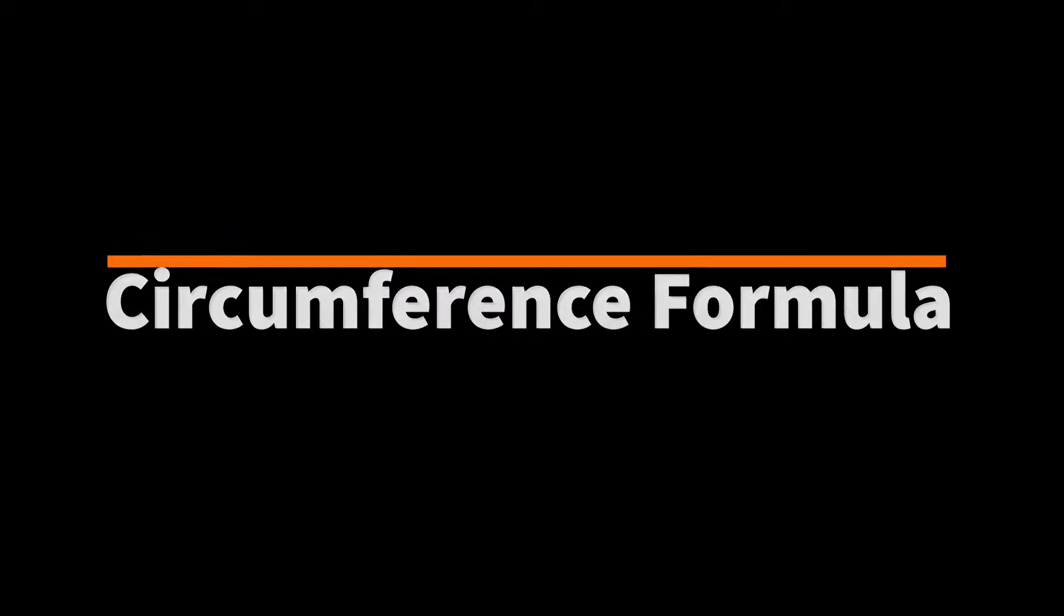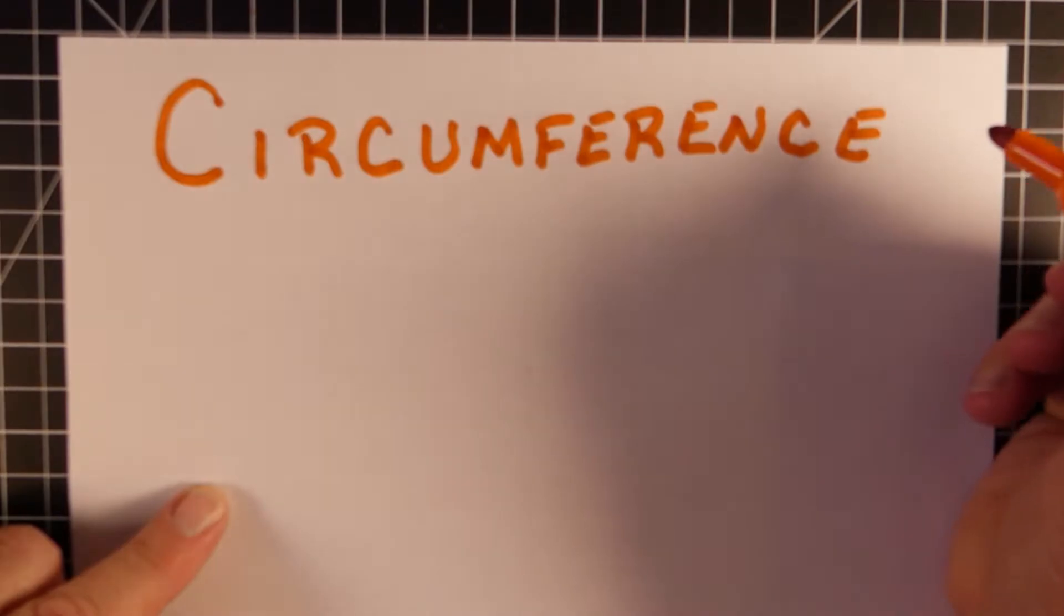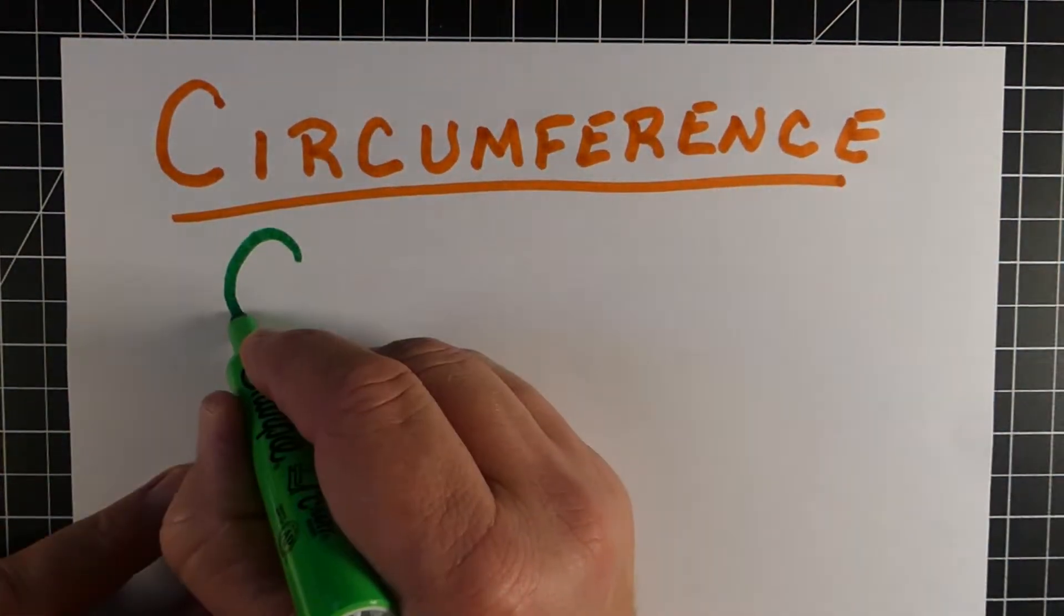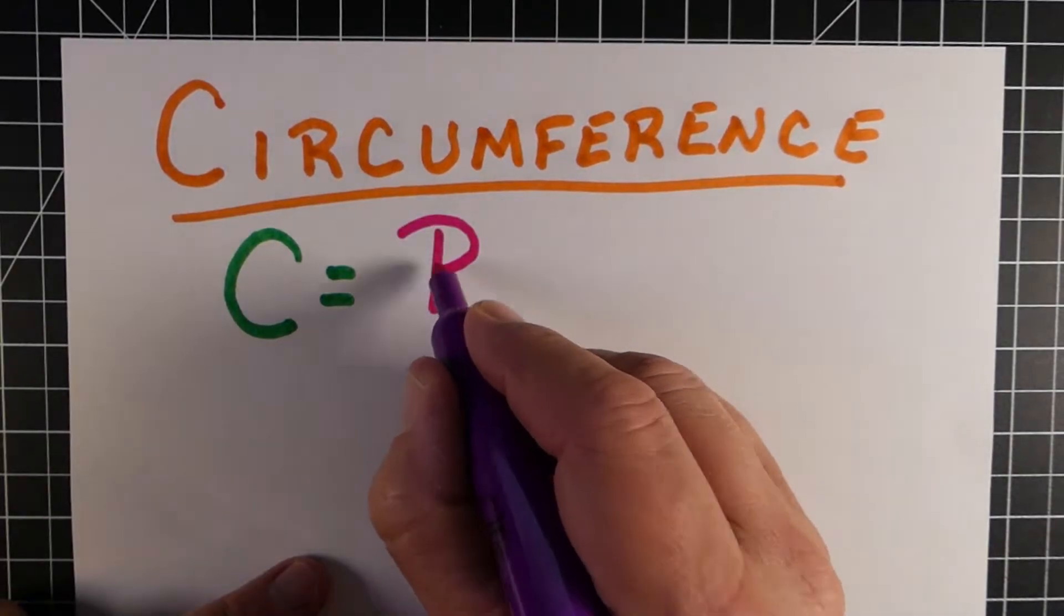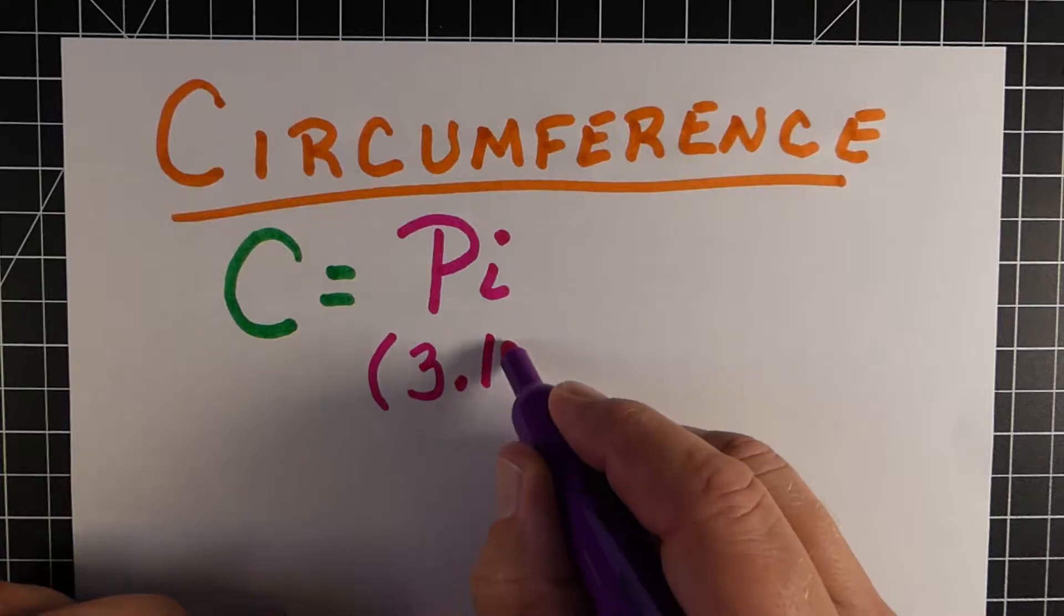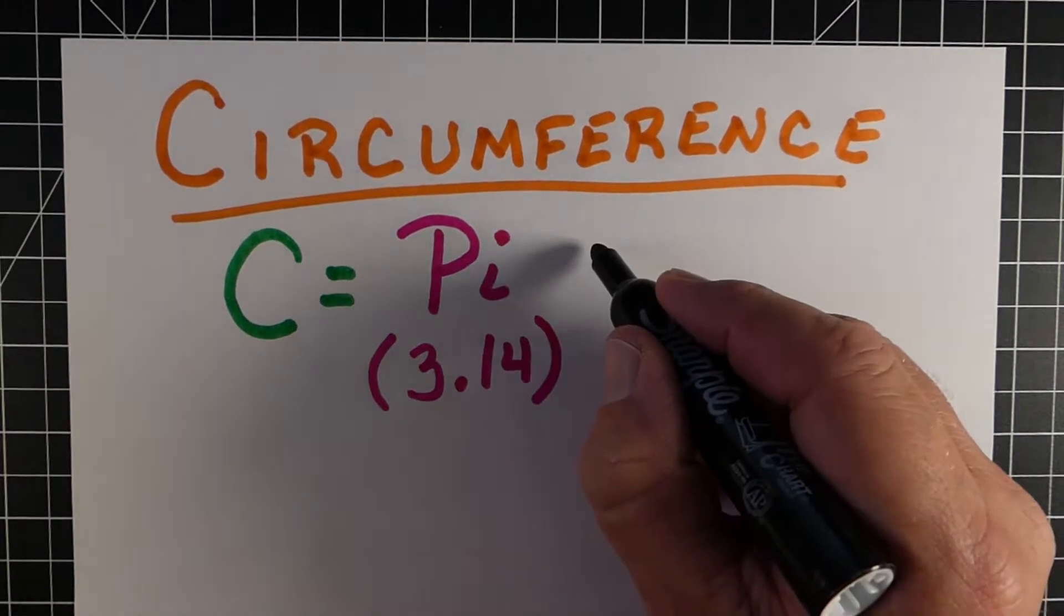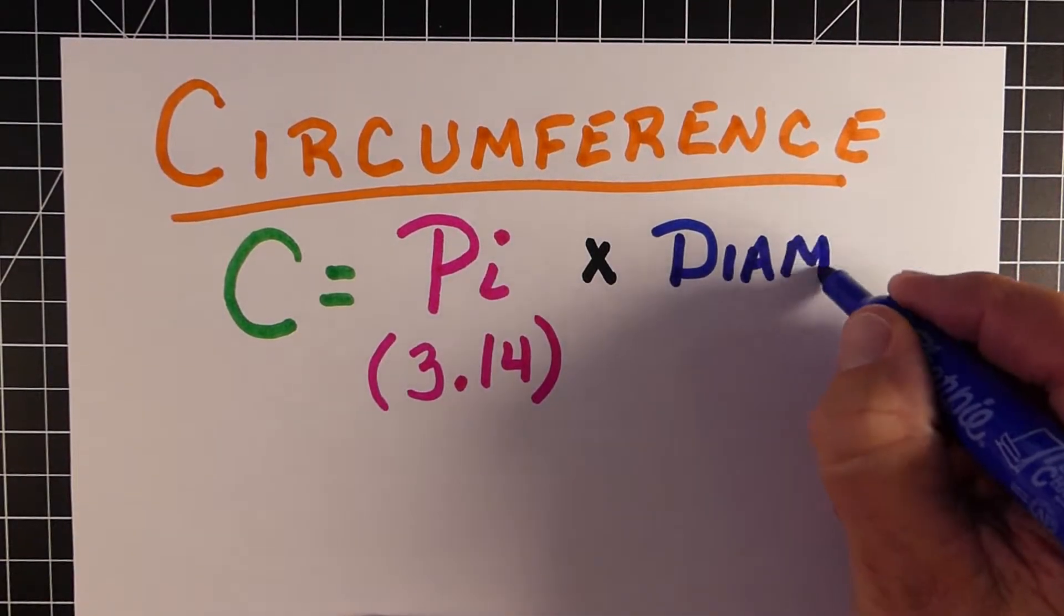All right, the first thing we're going to look at is the circumference formula. Now, we know circumference is the distance around a circle, and so the formula we have to find the circumference is pretty straightforward. To find the circumference, we take pi, which we're going to use 3.14, and we're going to multiply that by the diameter. And the diameter is the distance across a circle going through the center.